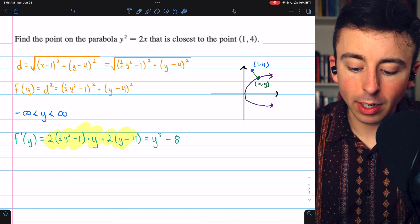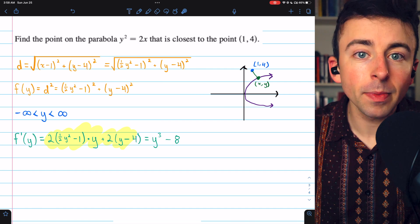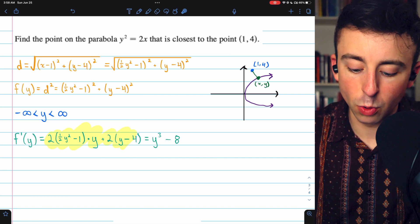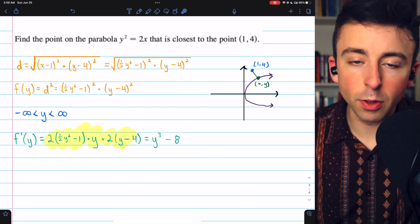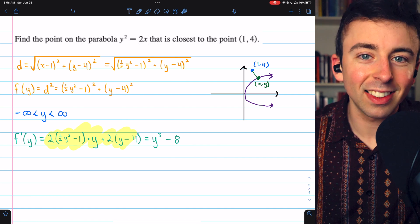Then the derivative of (y minus 4) squared is similar. The derivative of a thing squared is 2 times the thing. Multiply by the derivative of the inside function. In this case, that's just 1.